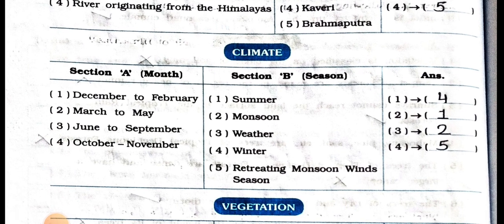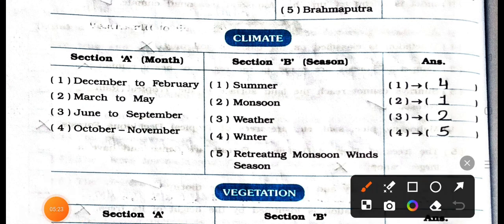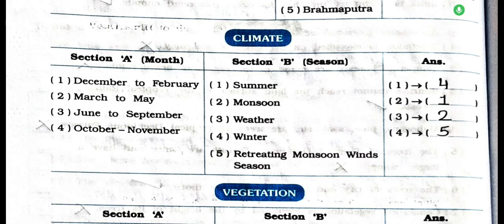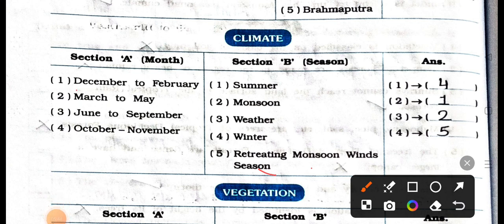Now see the match the column of climate. Section A is months: December to February, March to May, June to September, and October to November. Section B is seasons: number 1 summer, number 2 monsoon, number 3 weather, number 4 winter, number 5 retreating monsoon winds season. Answers: December to February matches with winter; March to May is summer; June to September is monsoon; October to November is retreating monsoon winds season.